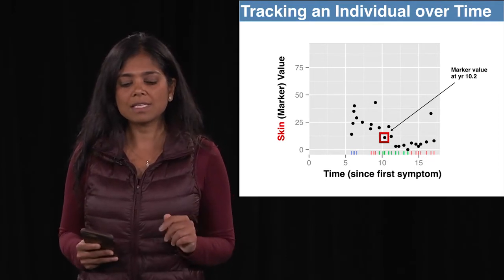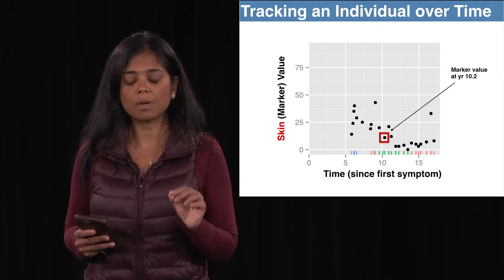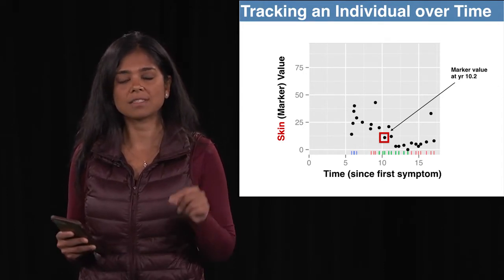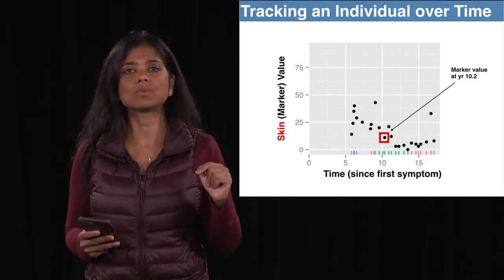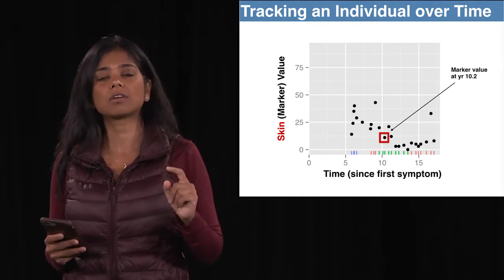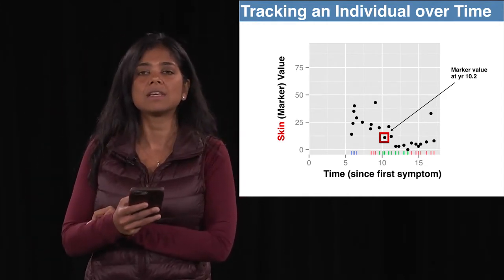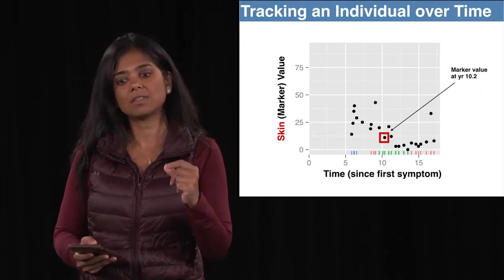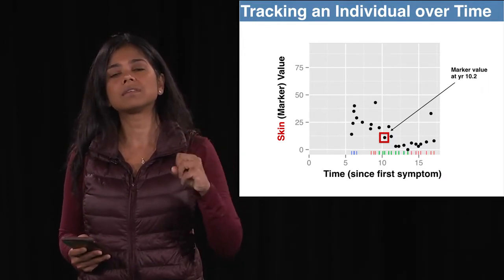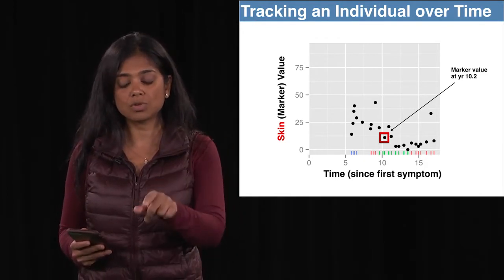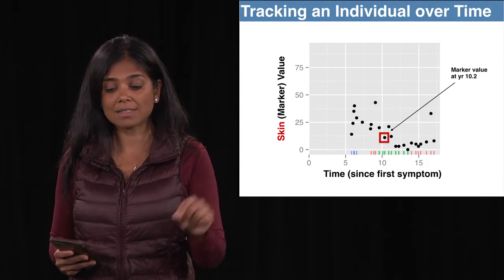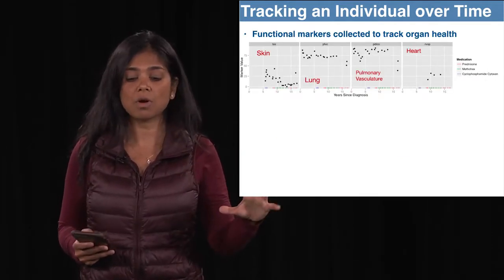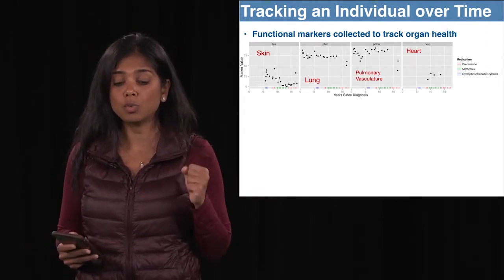Here's a real patient as an example. This is a chronic disease, so I'm showing data on the x-axis over 15 years. On the y-axis is the skin marker value, which measures skin thickness — in scleroderma the skin becomes fibrotic and thickens over time, so greater thickness is worse. Every visit, you see a marker value collected as a dot over time. This gives you the ability to track an individual, and skin is one such marker; there's a collection of such markers shown here.